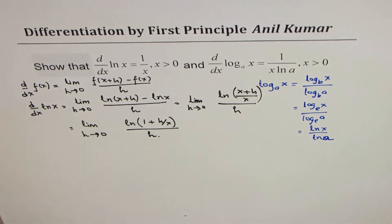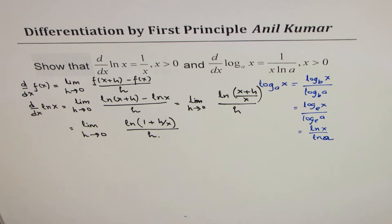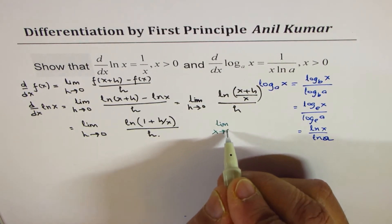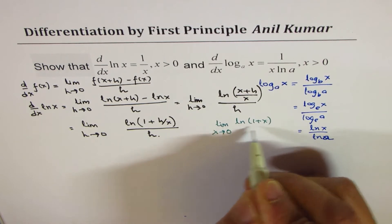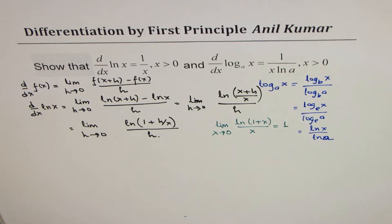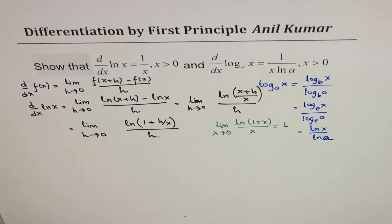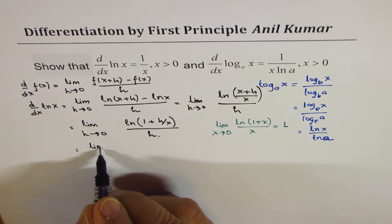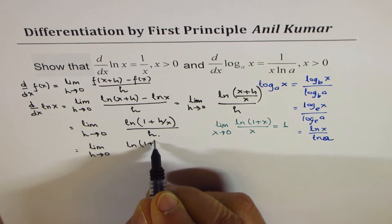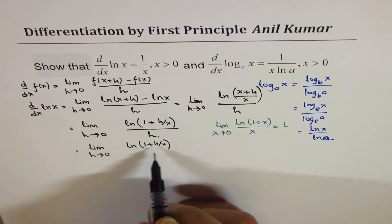We learned in limits a formula which we'll use here. The limit as x approaches 0 of ln(1 + x) over x is equal to 1. We are going to use this limit property for logarithmic functions. As you can see, the only difference here is that we have h over x, so we need to rewrite the expression accordingly.